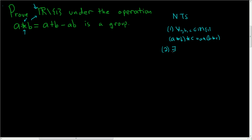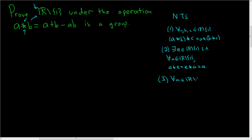Two, we need to show there exists an element e in our set such that for all a in our set, a star e equals e star a equals a. That's called the existence of an identity element. And three, we have to show that for all a in our set, we can find some element b in our set such that a star b equals b star a equals the identity element. So b is called the inverse of a. The third condition is that every element has an inverse element.